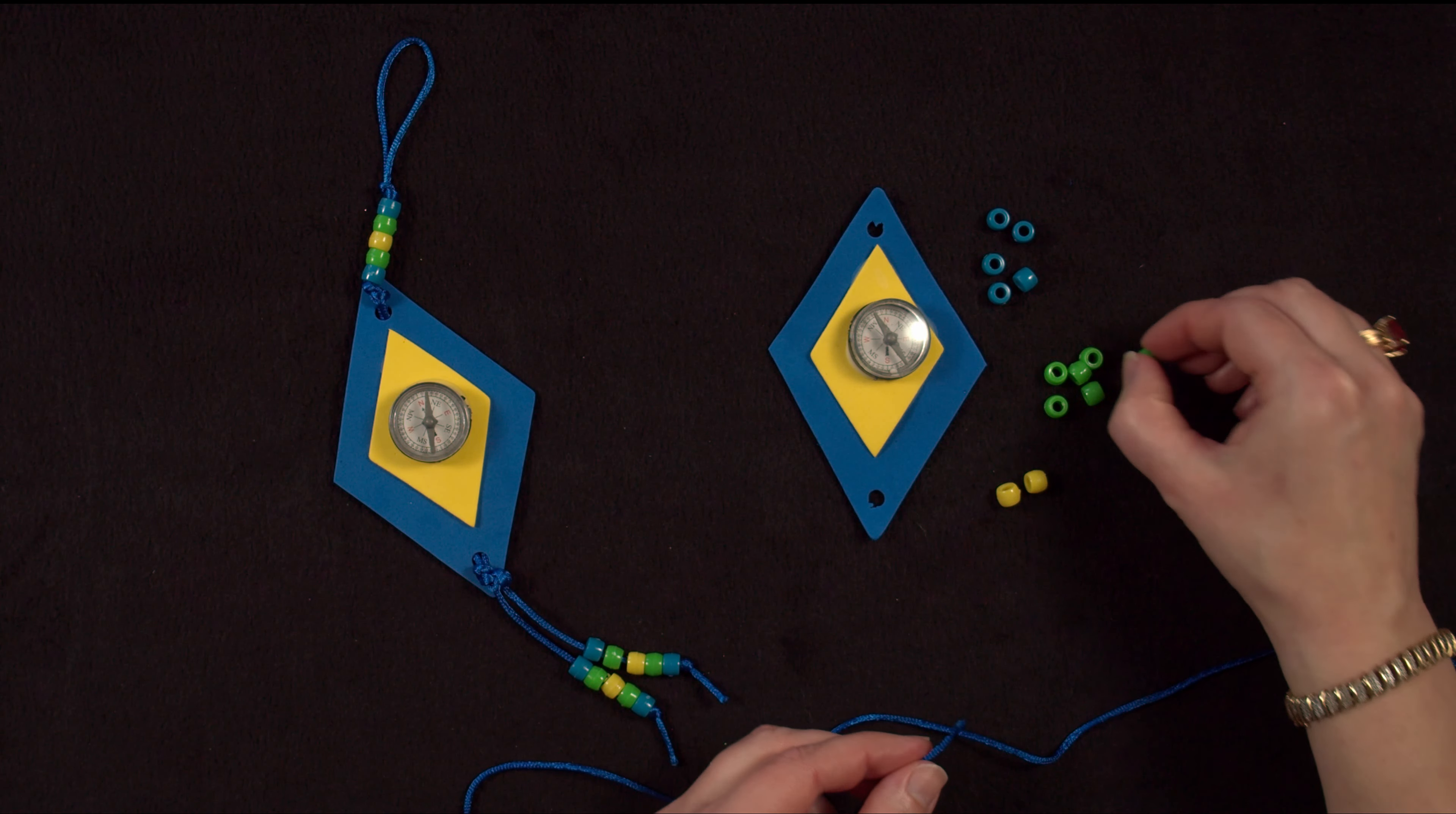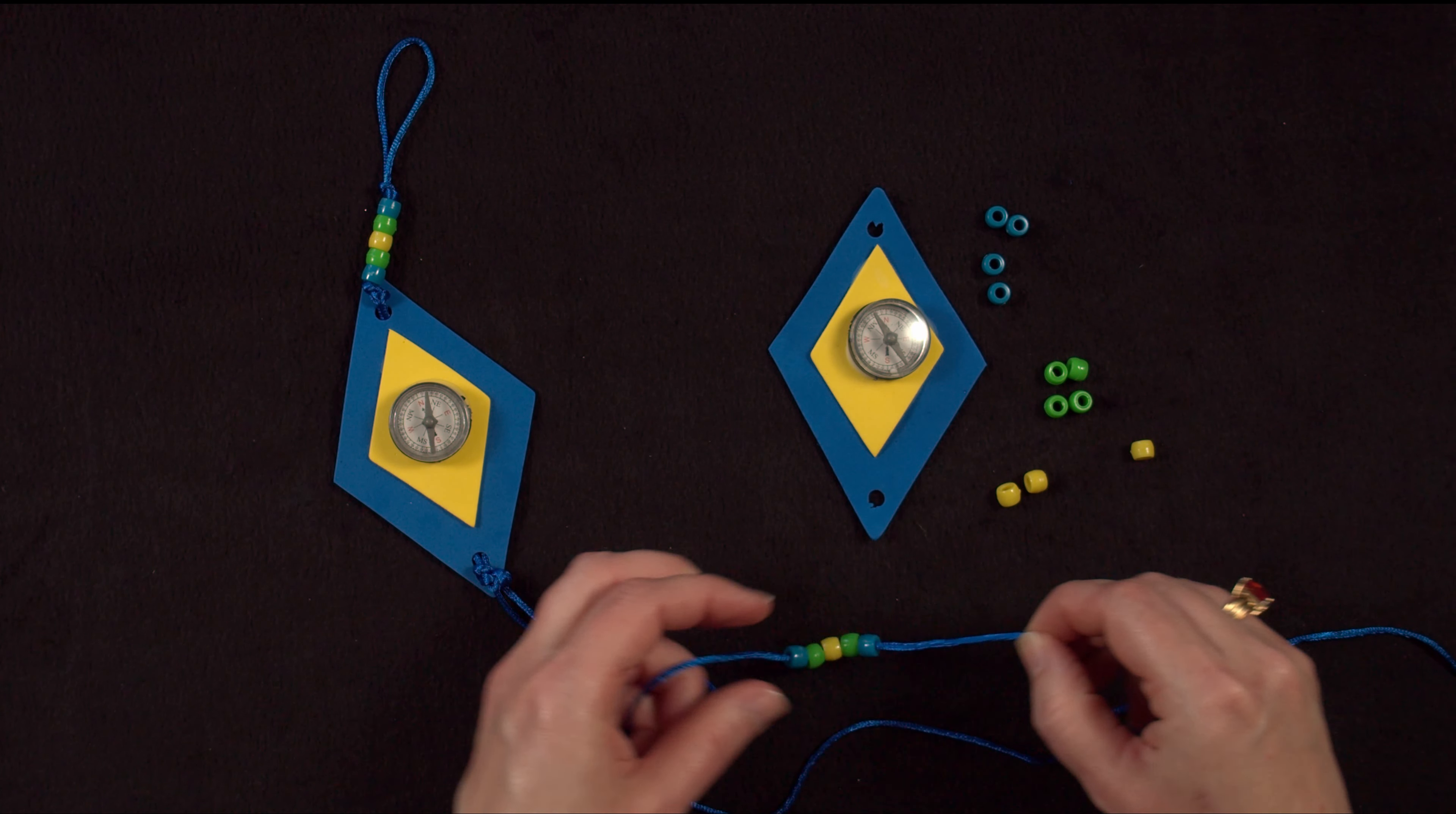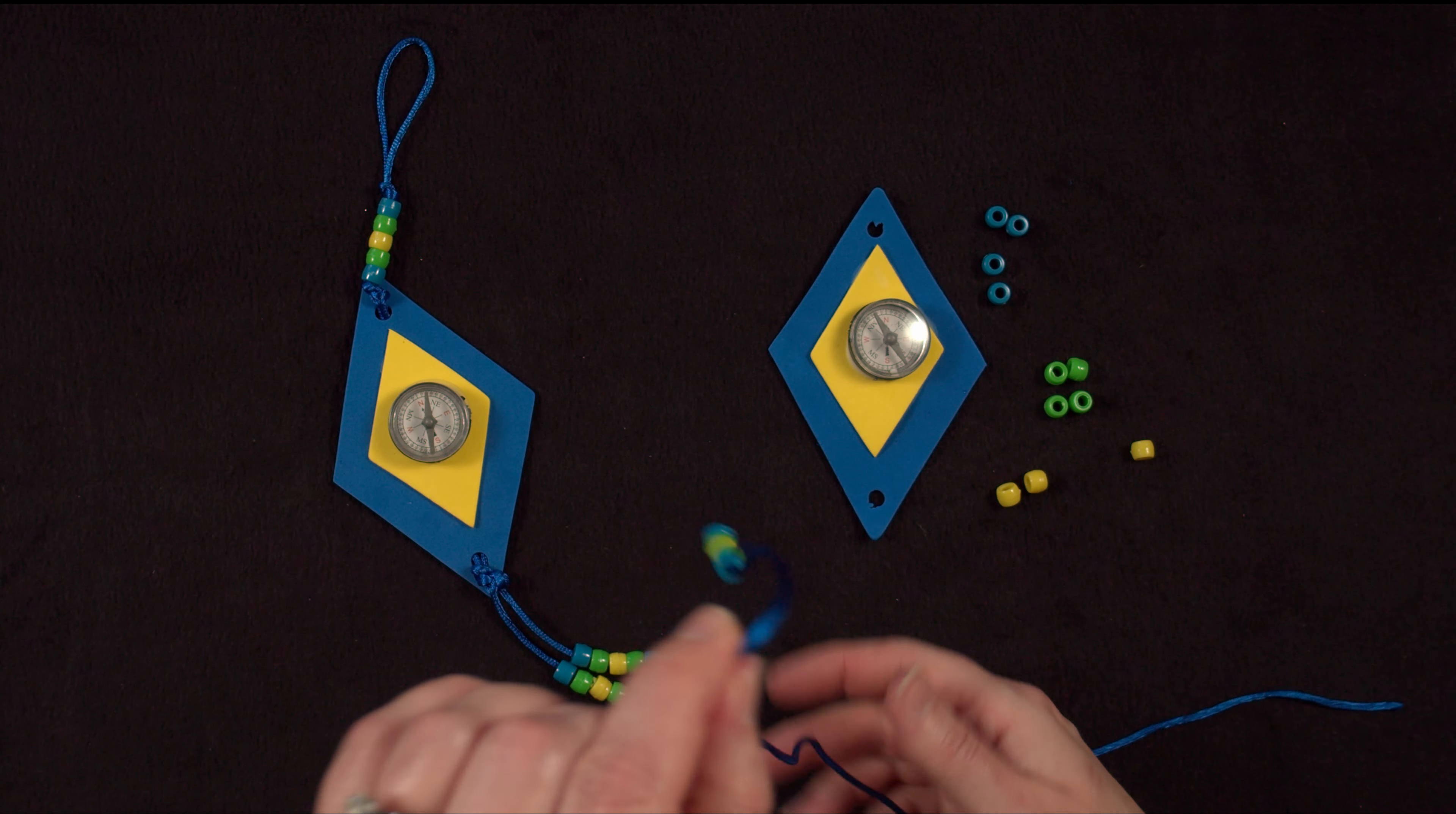Putting the beads on the end of one of your cords. So you're going to start with a blue, go to green, go to yellow, then to green. We're creating a bit of a pattern here. And then back to blue. So you should have something that looks like this. And then we're just going to take the end of our cord and tie it to keep those beads in place. And that way, when the beads fall down, they won't fall off of your cord.